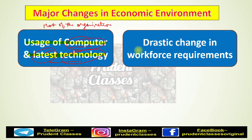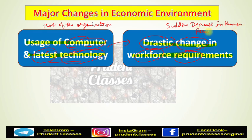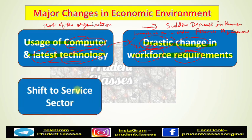The next change in the economic environment is related to the change in workforce composition or requirement. As the use of latest technology and computers started, drastic changes were seen in workforce requirements. There has been a sudden decrease in human resource requirements. Previously, a lot of human resources were required, but now one machine with one worker can give productivity equal to that of ten workers. These changes can be noticed in the economic environment.